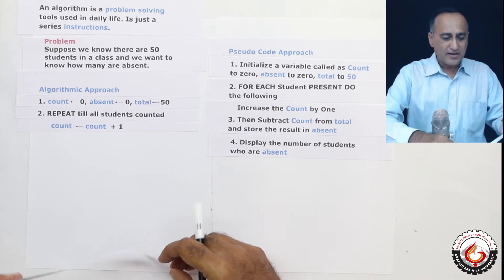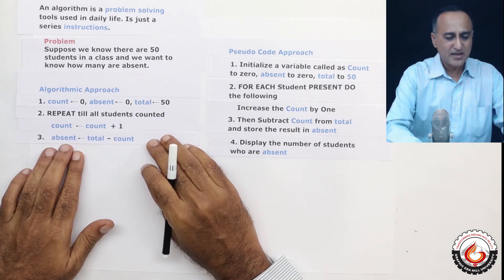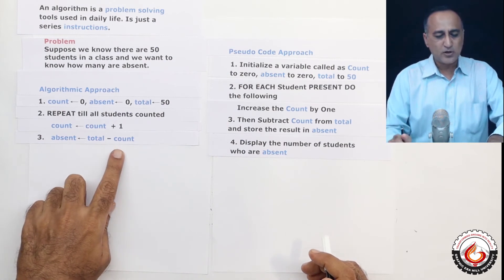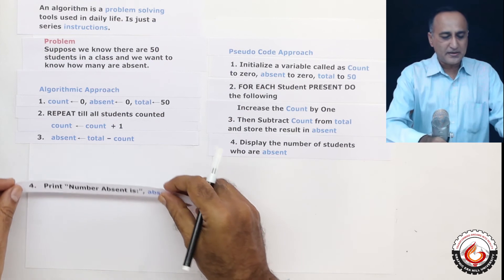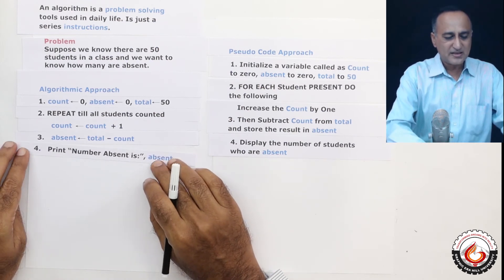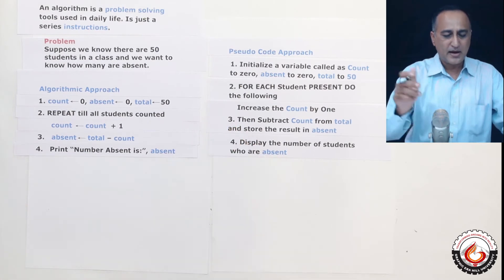Now in order to calculate the absentees, just see how I have done in step three, I have said absent is total minus count. And in the last step, I'm going to print the number of absent is absent. So here you can see it shows me the people who are absent.